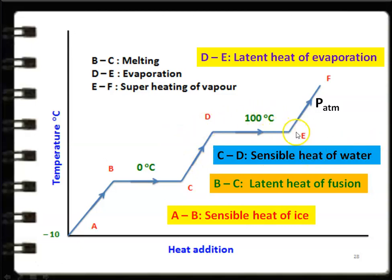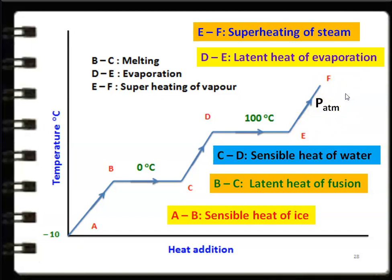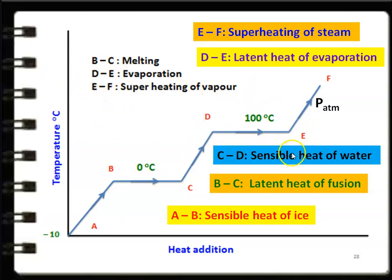At point E, the steam is called dry saturated vapour. When heat is added further, it becomes superheated steam — this is the superheating process. The heat added between E and F is the superheating of steam. So the five stages are: A–B (sensible heat of ice), B–C (fusion or melting), C–D (sensible heat of water), D–E (evaporation), and E–F (superheating of vapour).